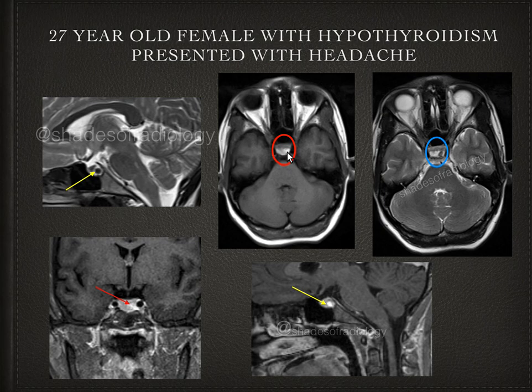The nodule appears hyperintense on T1, and similarly you can see this on axial images. On post-contrast, since it is already T1 hyperintense, we do not expect any enhancement or any change in the signal of this nodule.